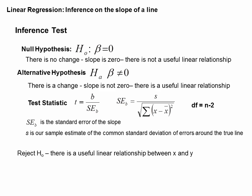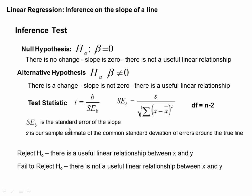We get our value for t, and then, just like before since chapter 18, we'll have a p-value. From the p-value, we will either reject our null hypothesis — which means there is a useful linear relationship between x and y. When we reject it, our alternative hypothesis is supported; we say there is a useful linear relationship between x and y. Otherwise, we fail to reject, meaning the null hypothesis holds — there's no slope, no change, and not enough useful information to show a linear relationship between x and y.